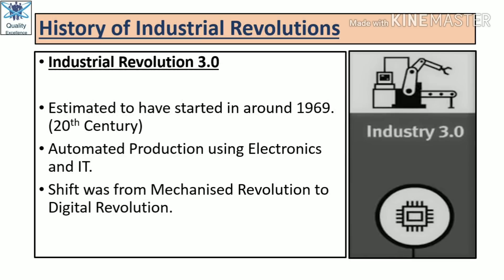Let us know Industrial Revolution 3.0. It was estimated to have started around 1969, which is the 20th century. Here, automated production started with the use of electronics and information technology. Computers and electronic parts were involved and production was automated. The shift was from the mechanized revolution to the digital revolution — the mechanized revolution was slowly shifted to a digitized revolution.